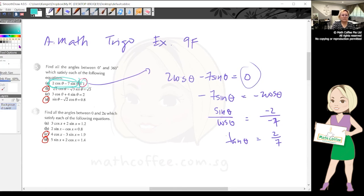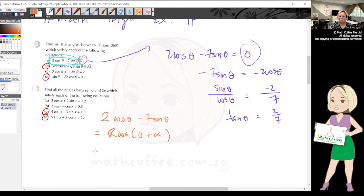So how do you change it to single trig? Make use of R formula. You focus on the left hand side, so that means 2cosθ - 7sinθ I shall change it to the form R cos(θ + α). It starts from cosine.